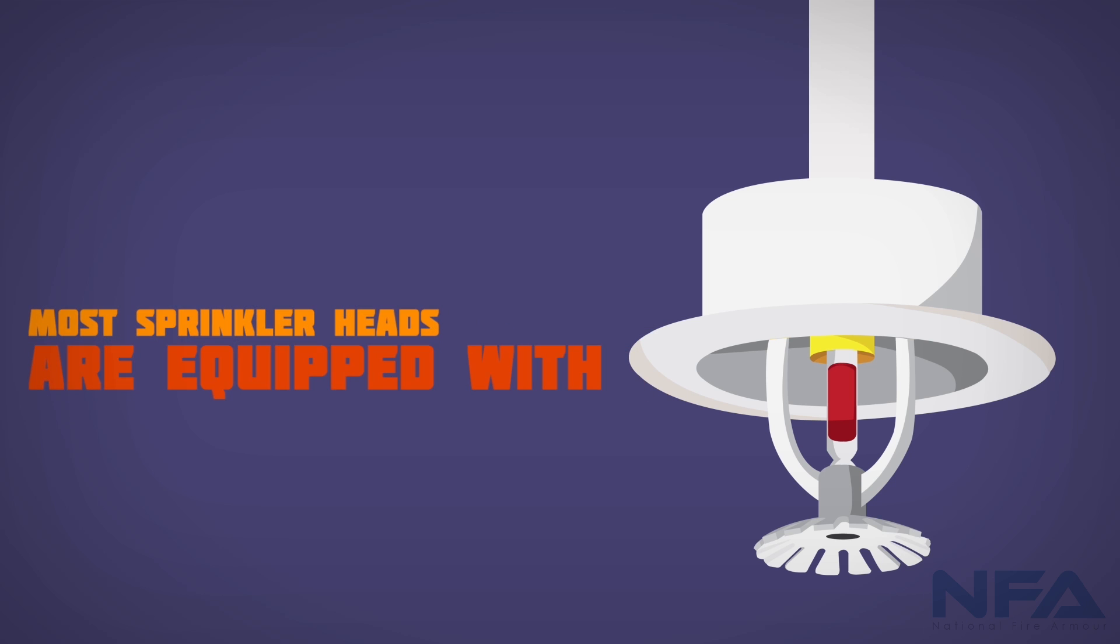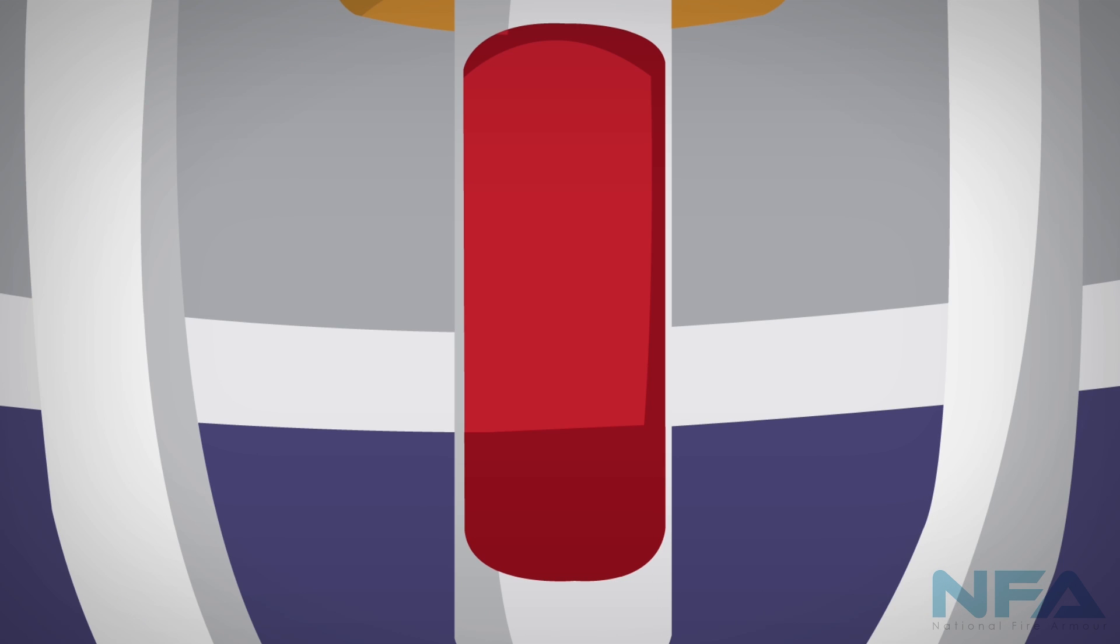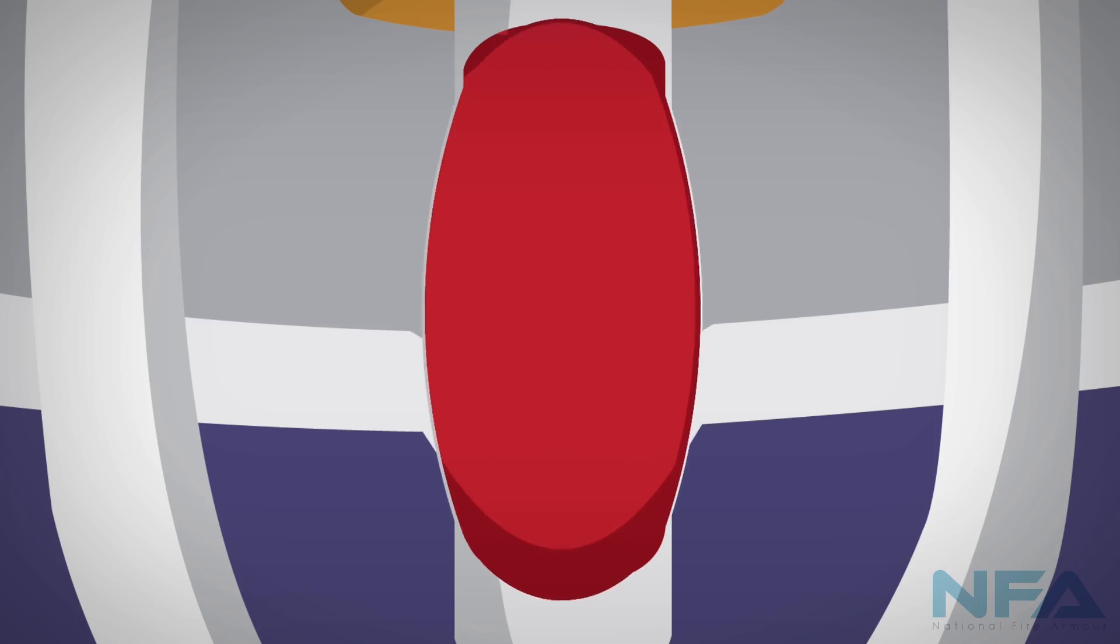Most sprinkler heads are equipped with a glass trigger filled with a glycerin-based liquid that expands at the appropriate temperature, breaking the glass and activating the sprinkler head.